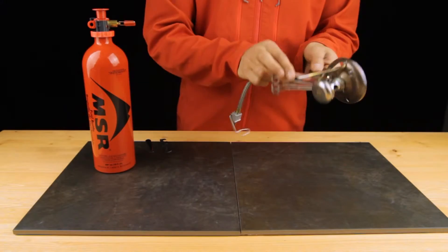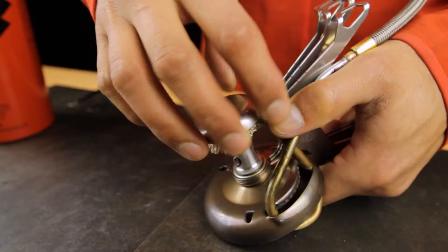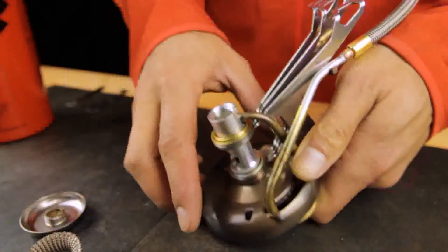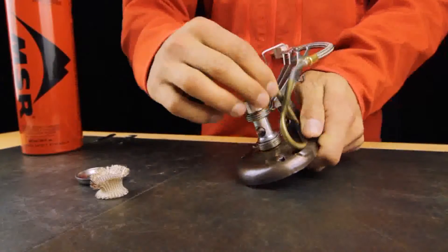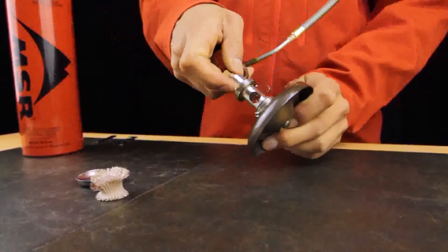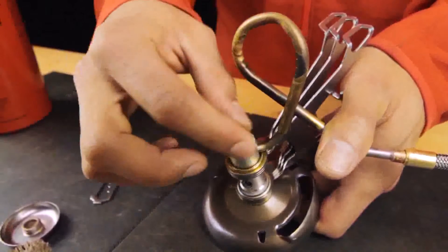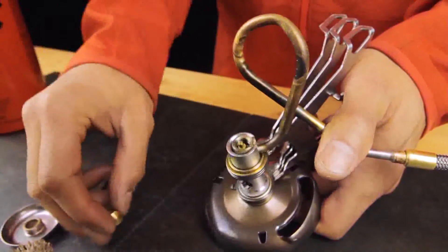To change the jet, first fold the pot support's legs, unscrew the priming cup, and remove the wick. Remove the fuel line from the stove, invert it, and place the elbow of the fuel line back into the mixer tube. Using the jet and cable tool, carefully unscrew the fuel jet, taking care not to lose the shaker needle inside the elbow.